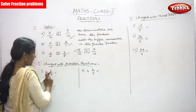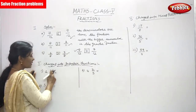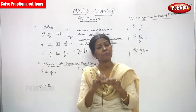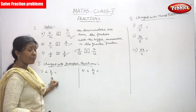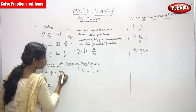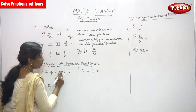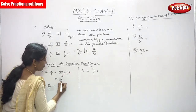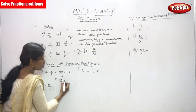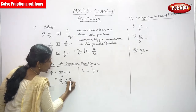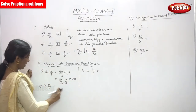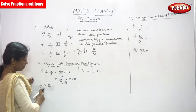Now, change into improper fraction. The first question is 2 and 3 by 7. This is a mixed fraction — a whole number combined with a proper fraction. 2 is the whole number and 3 by 7 is the proper fraction. To convert: 2 into 7 plus 3, all divided by 7. That gives 14 plus 3, which is 17 by 7. So 17 by 7 is the answer — an improper fraction where the numerator 17 is greater than the denominator 7.